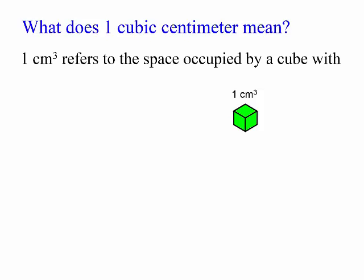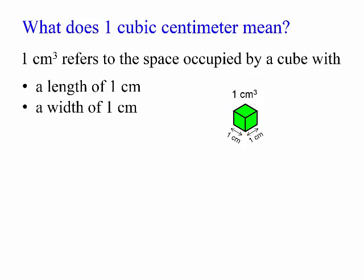What does 1 centimeter cube mean? 1 centimeter cube refers to the space occupied by a cube with a length of 1 centimeter, a width of 1 centimeter, and a height of 1 centimeter.